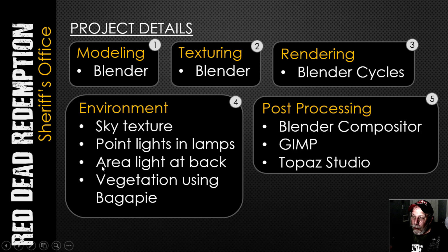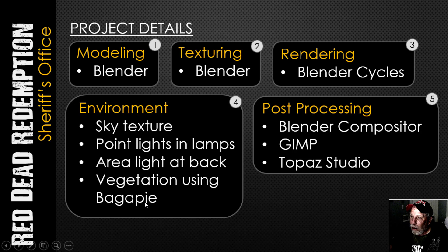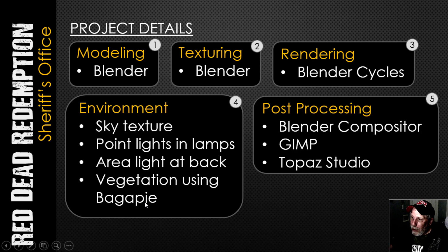I have some point lights in the lamps. There are two kerosene lamps — one on the front, one on the back. There's an area light at the back, and I did some vegetation using the Bag of Pie modifier, which is free, and some free plant models as well. I did not put clouds in the sky or a setting sun or anything like that. The main thing was to get the model and to adequately light it, and that's really all I wanted to do and all I had time to do in this series.